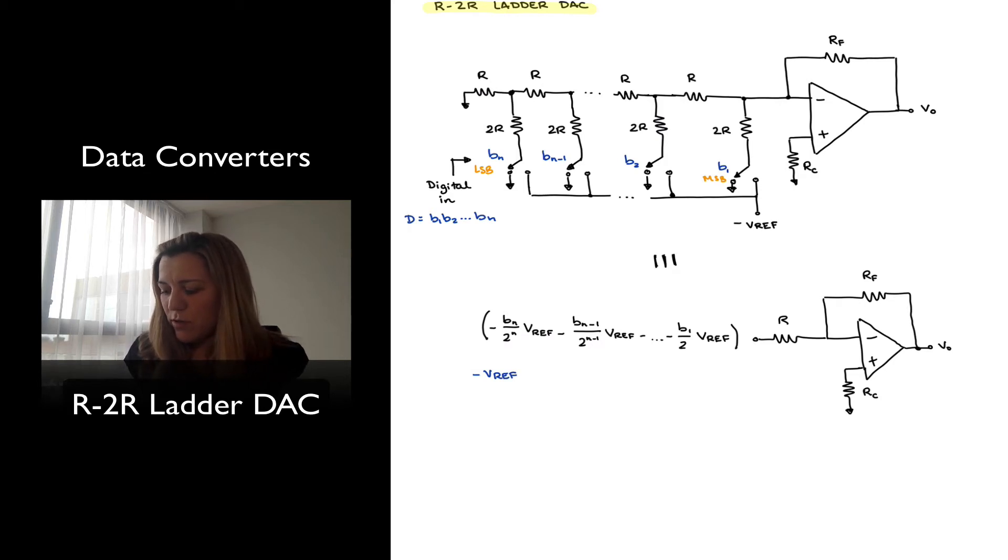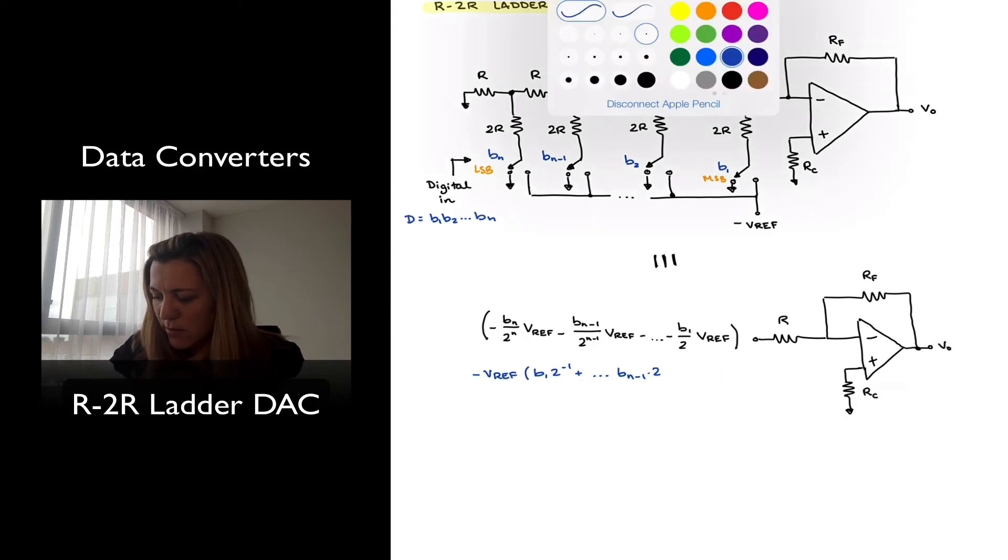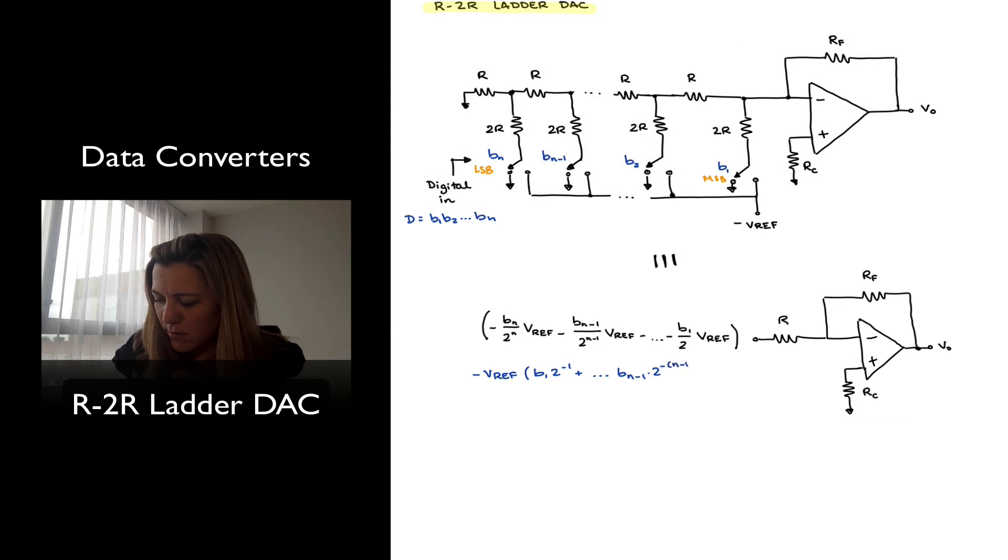And I'm going to turn it around so that we see it clearly, my most significant bit, B1, 2 to the negative 1, plus Bn minus 1, 2 to the n minus 1, plus Bn, 2 to the n—sorry, 2 to the negative n minus 1, plus Bn, 2 to the negative n. So this is what I will end up with. So notice that my most significant bit has the highest weight, my least significant bit, Bn, has the smallest weight, 2 to the negative n.